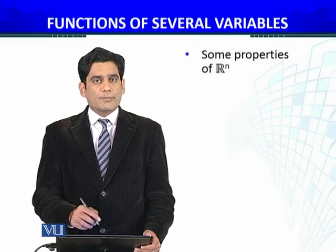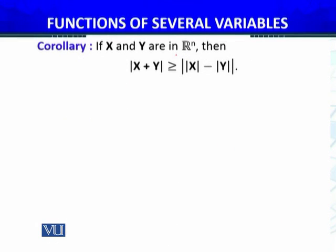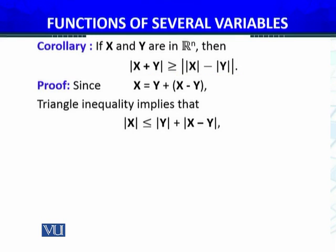Some properties of Rn — in Euclidean space Rn, the absolute value or magnitude of the vector x plus y is greater than or equal to this inequality. If you recall, we have this in Analysis 1 for real numbers. We will prove this now.